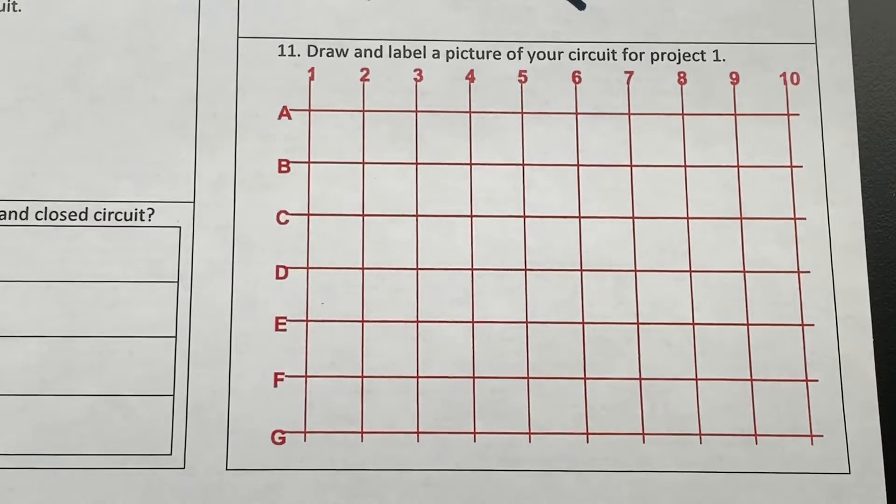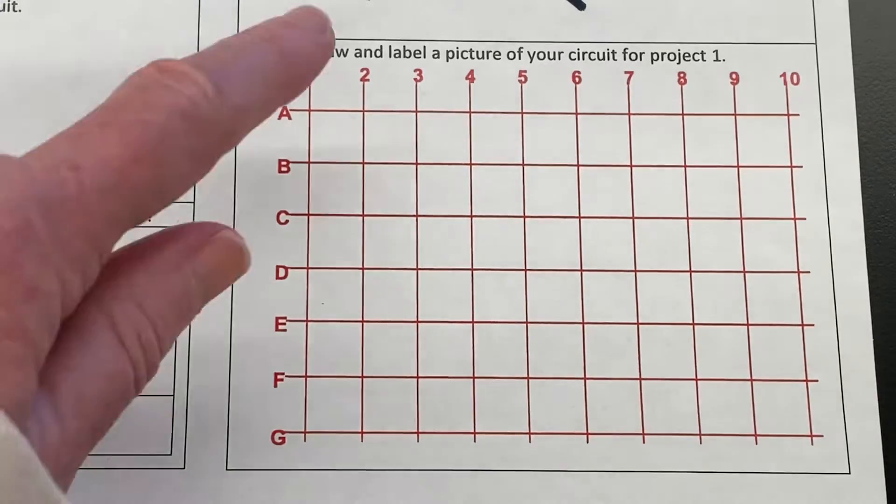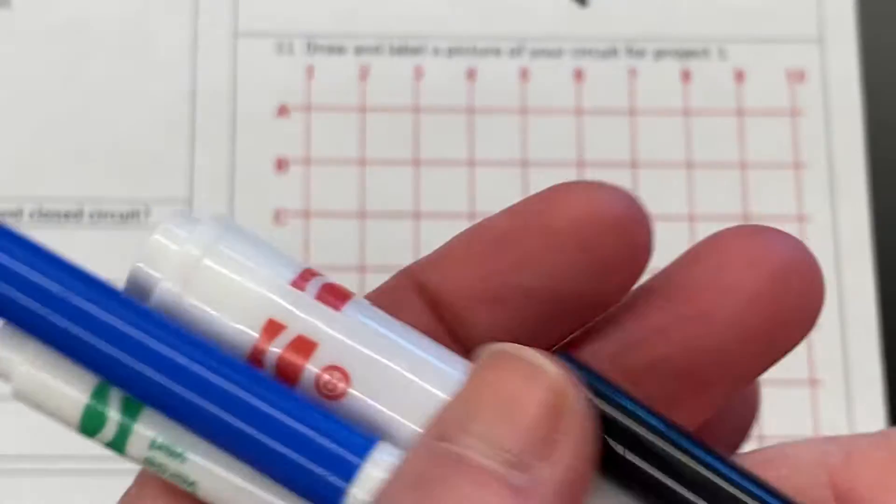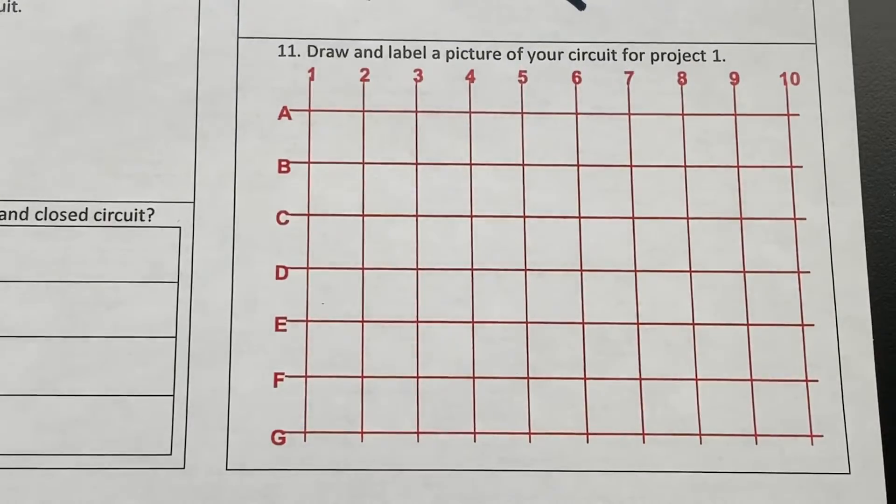Okay, we're going to diagram the circuit on our sheet in our notebook for number 11. We need four colors of markers: red, black, blue, and green. I always start with the battery pack.